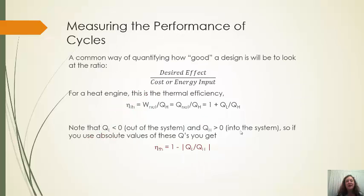Now, the way we measure performance in a cycle is to... All of our measures of performance are going to be sort of like this. We're going to take whatever the desired effect is, what is our goal out of this process or cycle or whatever, and divide by what's the cost for this. So, for a heat engine, our goal is power. The cost is that heat input we're having to put in at, say, the boiler. And so we end up with net power over heat transfer in is going to be this thermal efficiency.